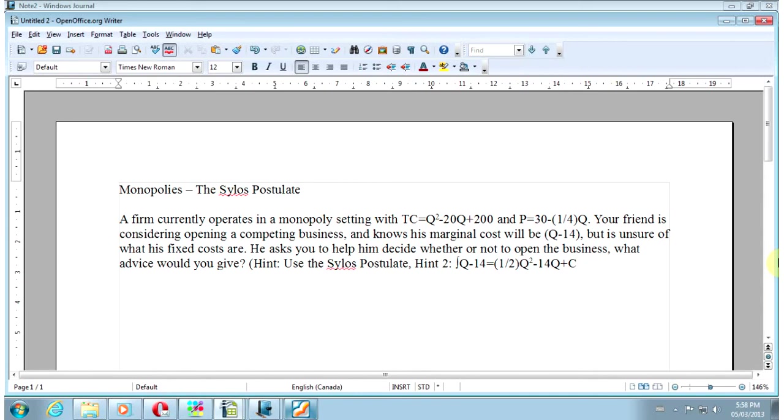There's a firm currently operating in a monopoly setting. Their total cost is Q squared minus 20Q plus 200 and demand is P equals 30 minus 1 over 4Q. So I've already done the rearranging for you.